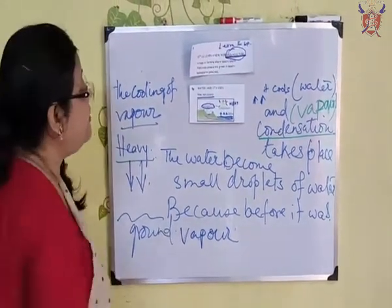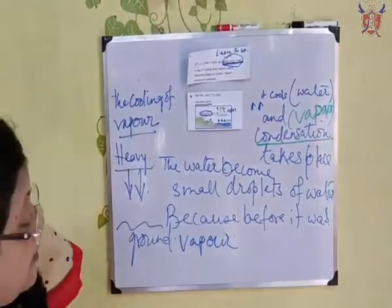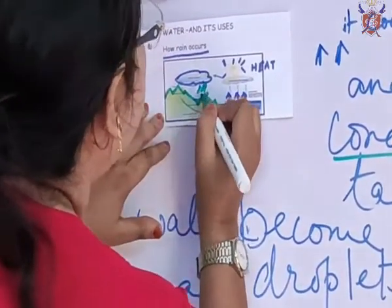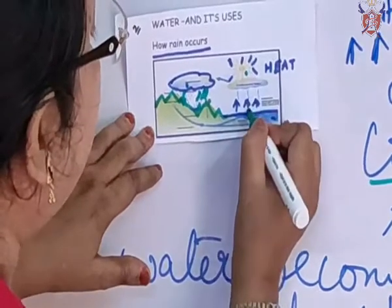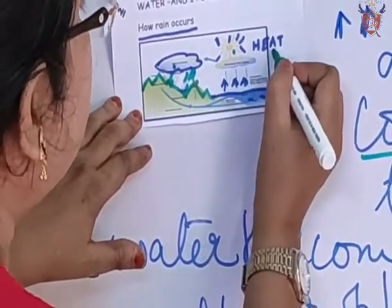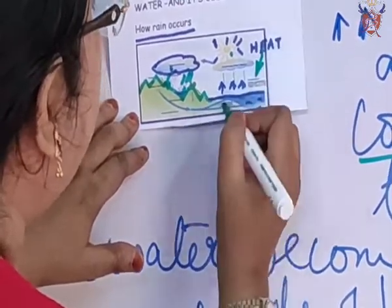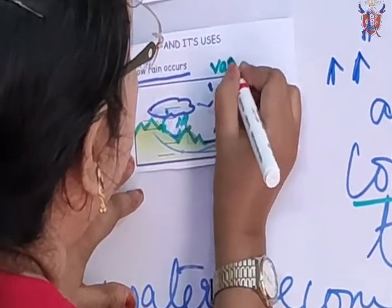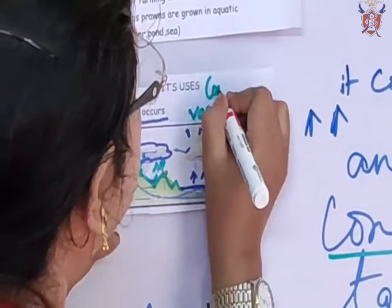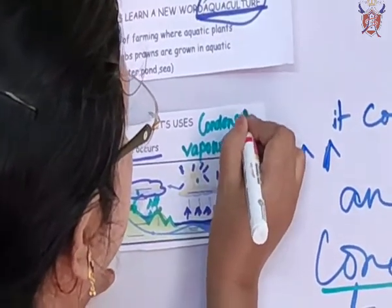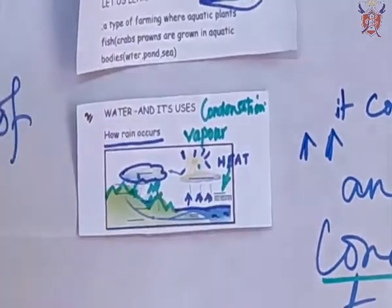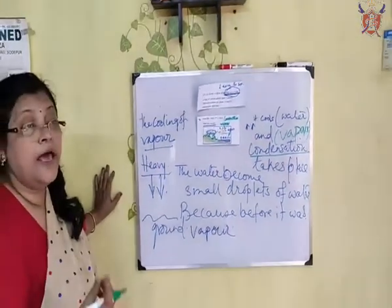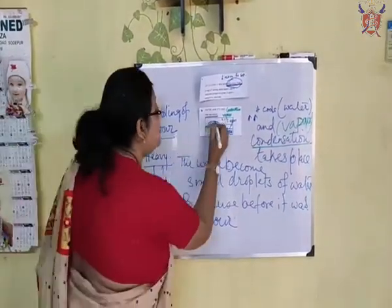The water again comes back on the same land. This is the rainfall, this is the cloud, this is the sun, and this is the vapour which is going up. The heat of the sun comes down, the water is evaporated, and then condensation takes place. When condensation takes place, the water droplets become heavier and it drops as rain.